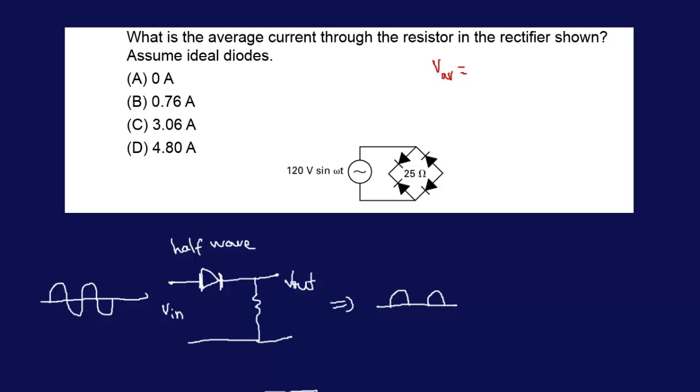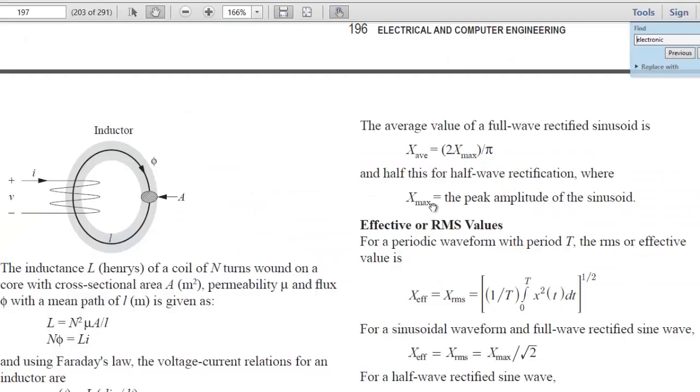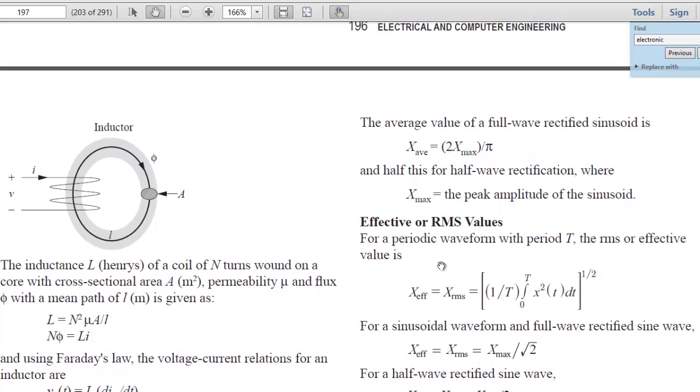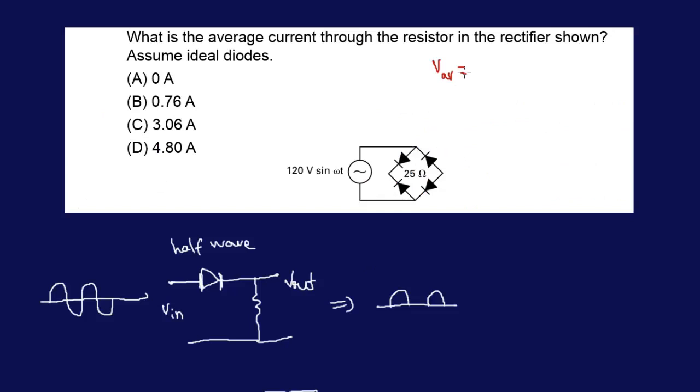How do you find the average voltage? We can go to the book. As you can see, I already looked it up. You have 2 times your maximum value—that could be voltage or anything else—divided by pi. For full-wave rectifiers.